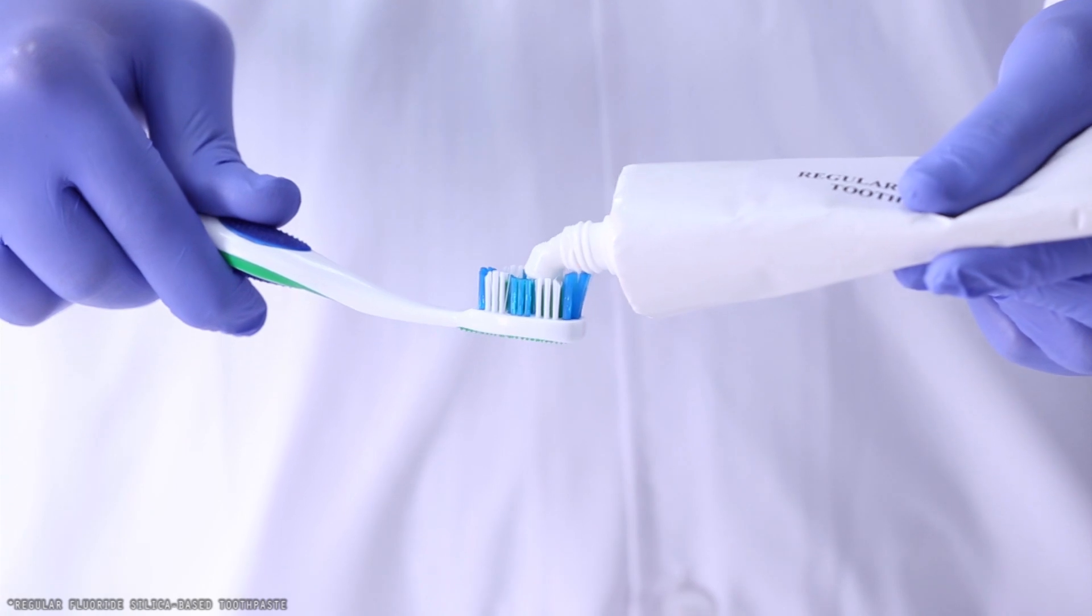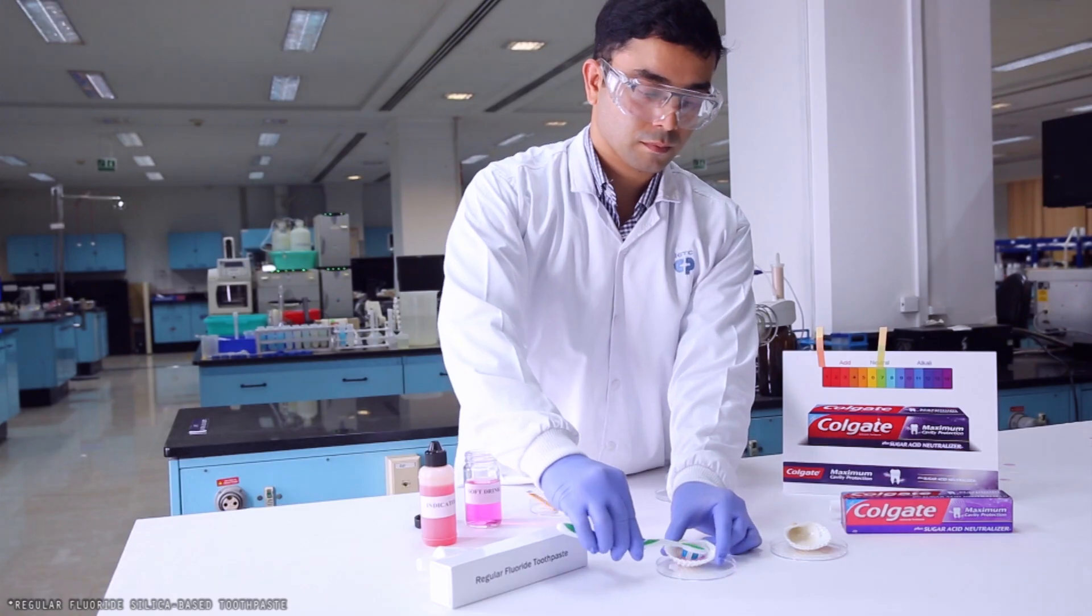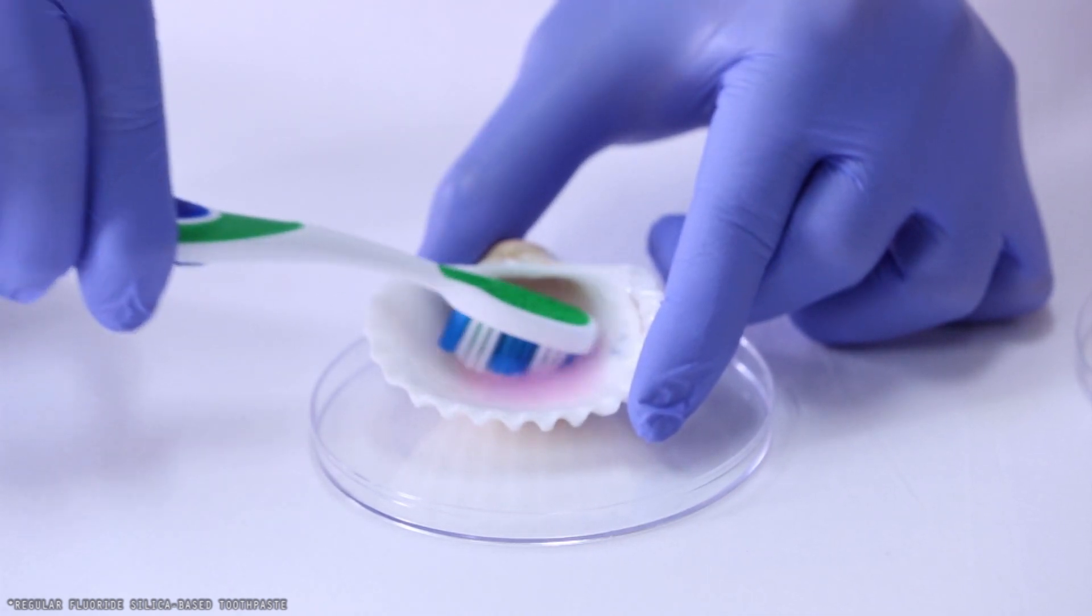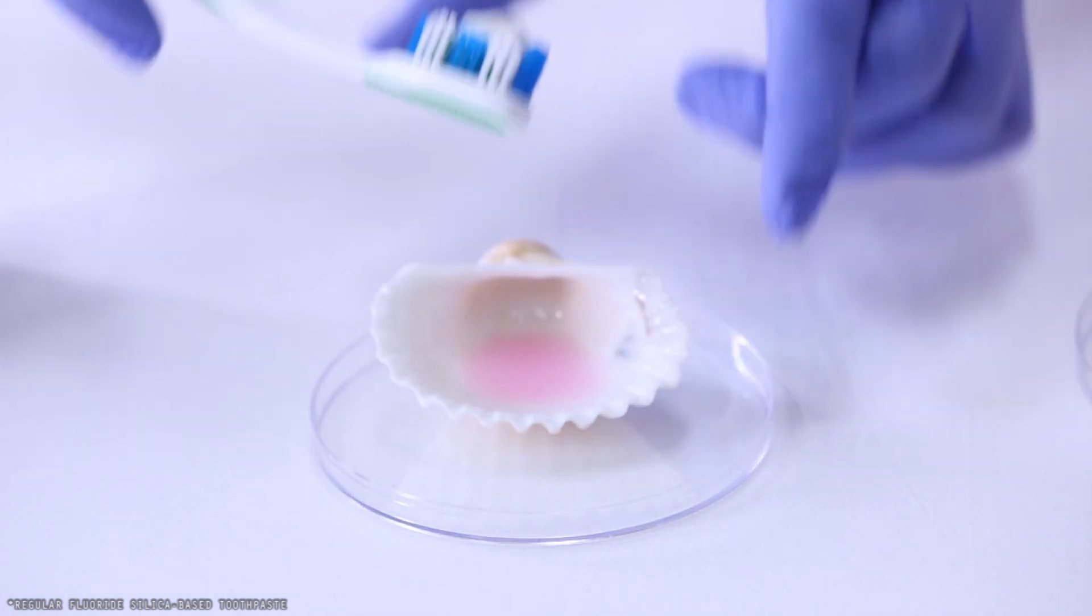Now, we brush the other shell using regular fluoride toothpaste. The color of the solution does not change, which indicates that the sugar acid is not neutralized.